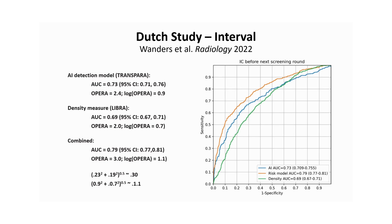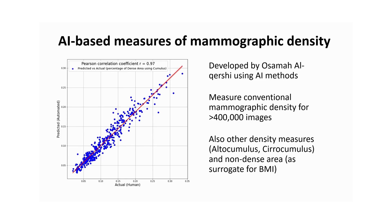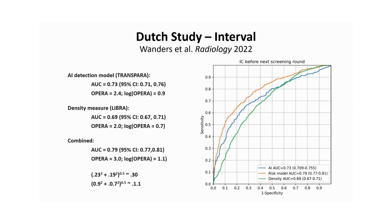We haven't yet put density into our model, but that's coming. We're learning density using AI — Osama Al-Khiasi is doing this work. Kevin's group has done Cumulus measurements by hand for hundreds of thousands of women, and the computer is now learning to reproduce density measurements automatically. We can then apply this tool to the 100,000 women in our sub-cohort. My prediction is that, just like the Danish study, this will add to the short-term prediction.